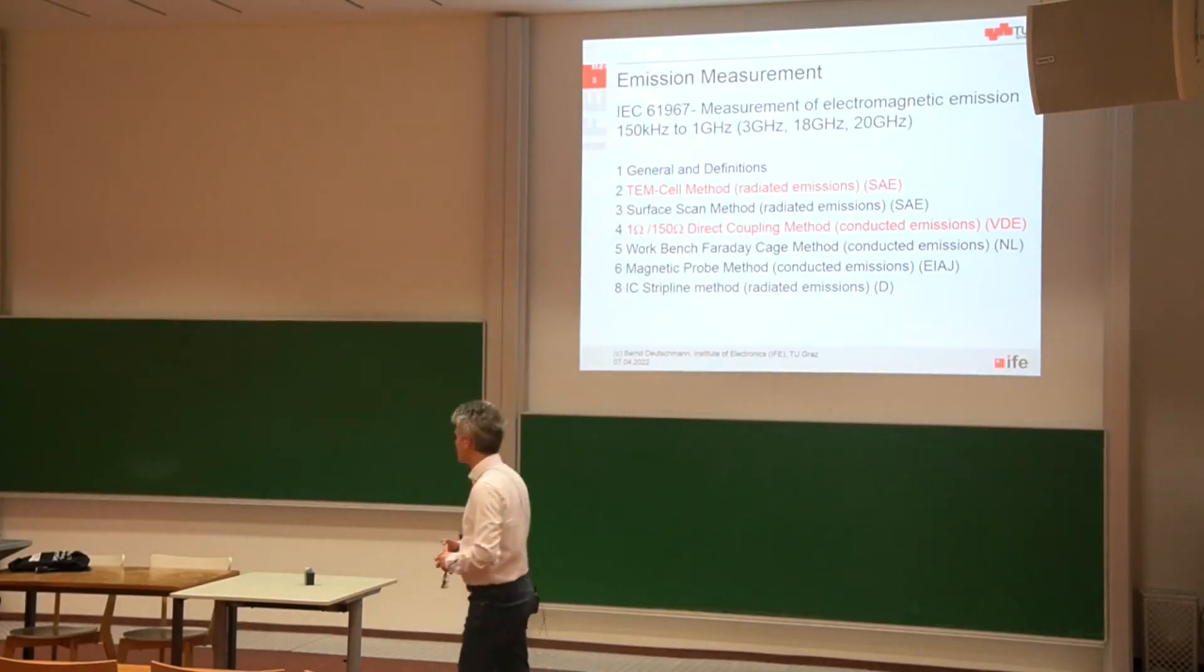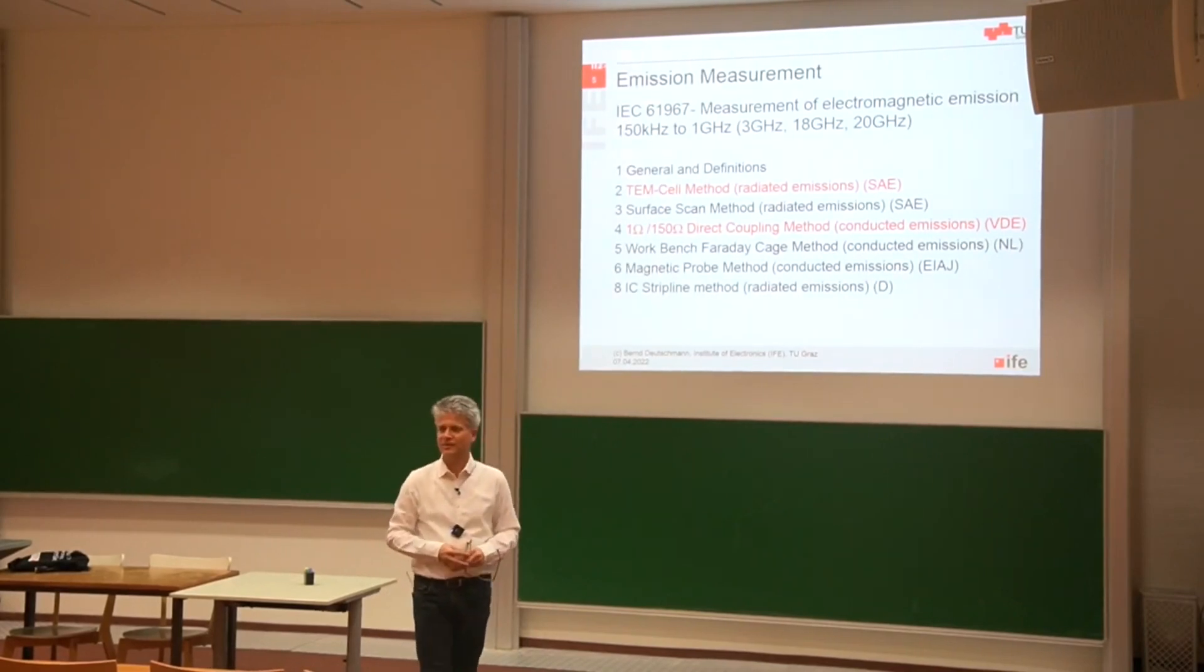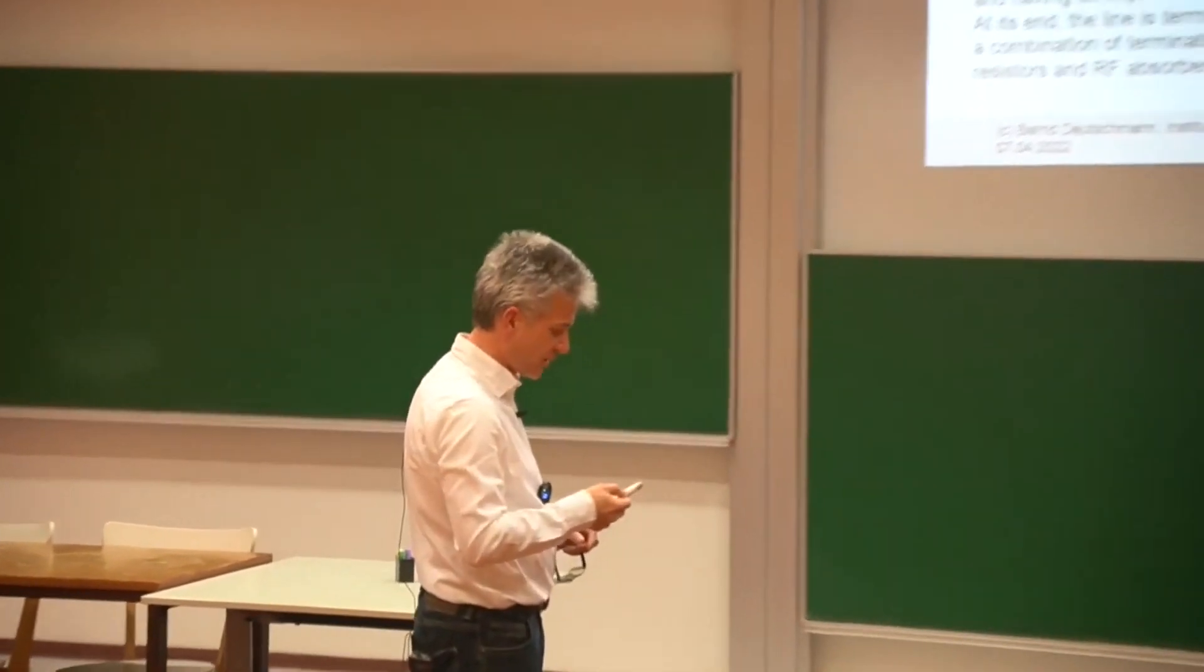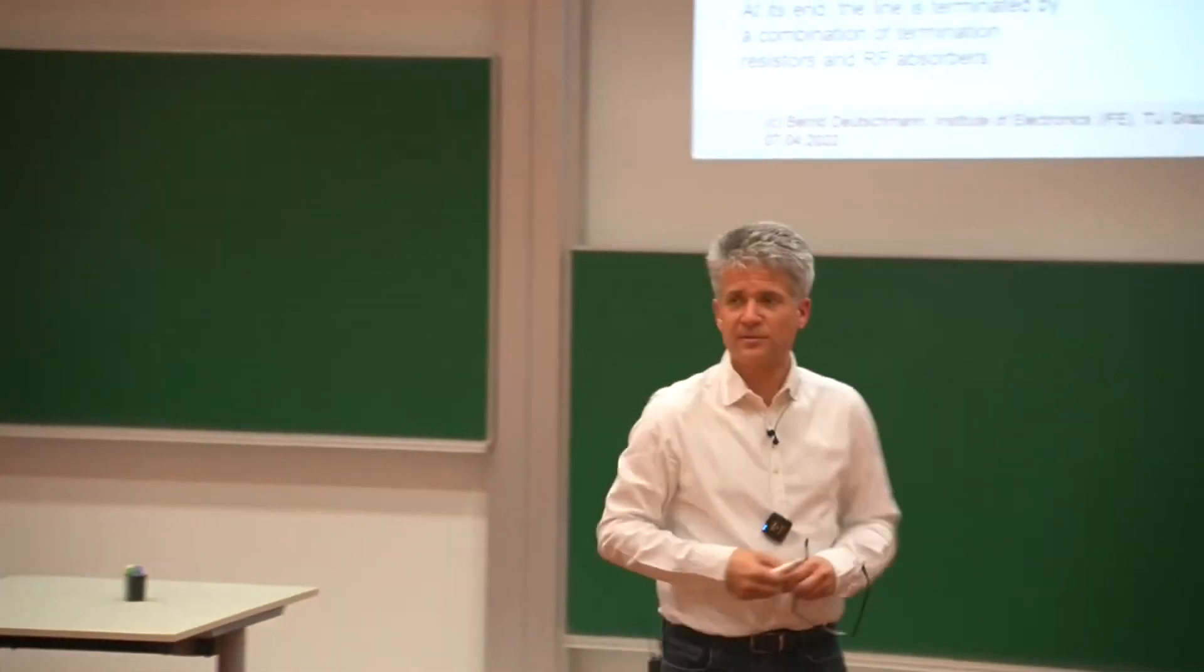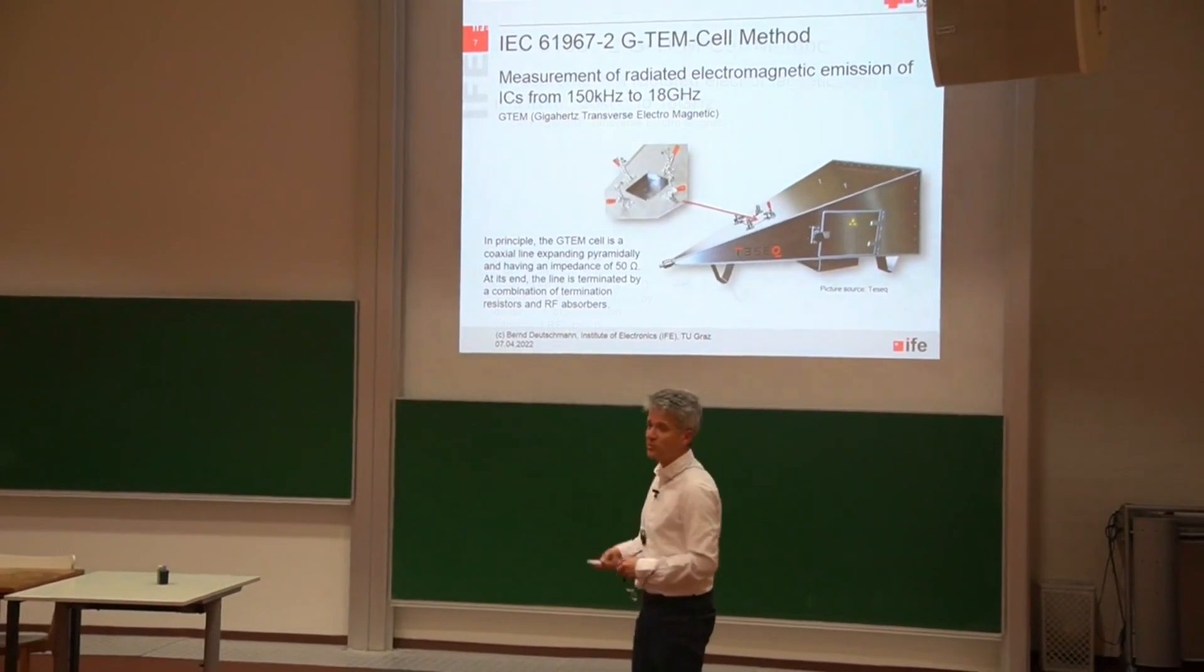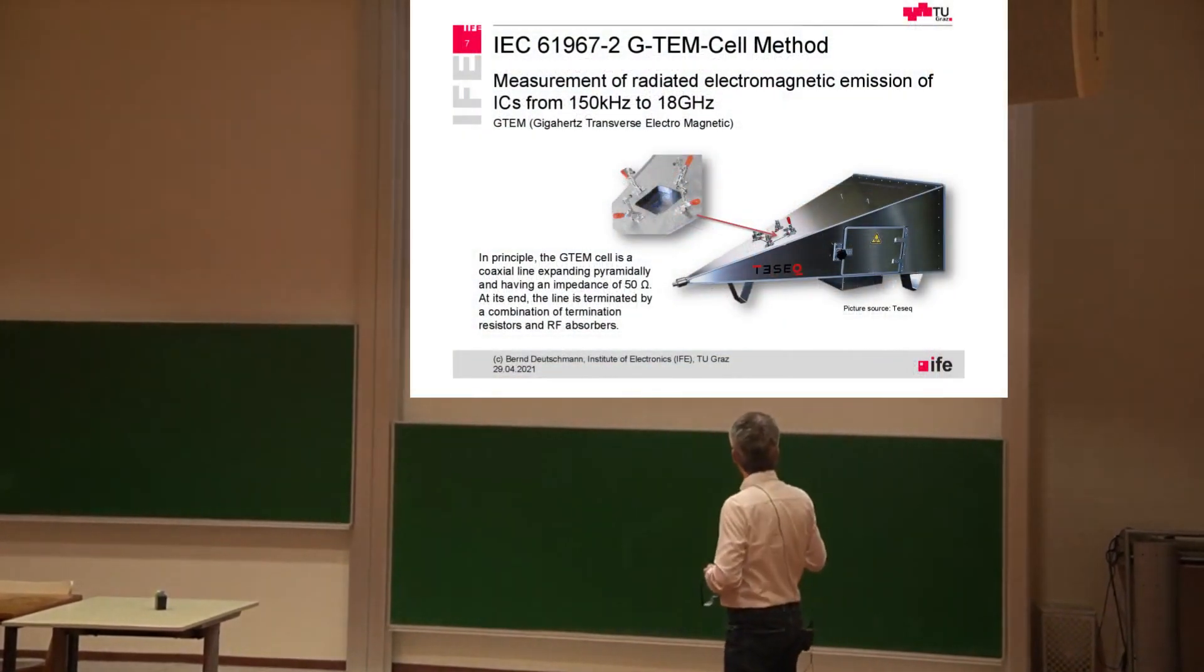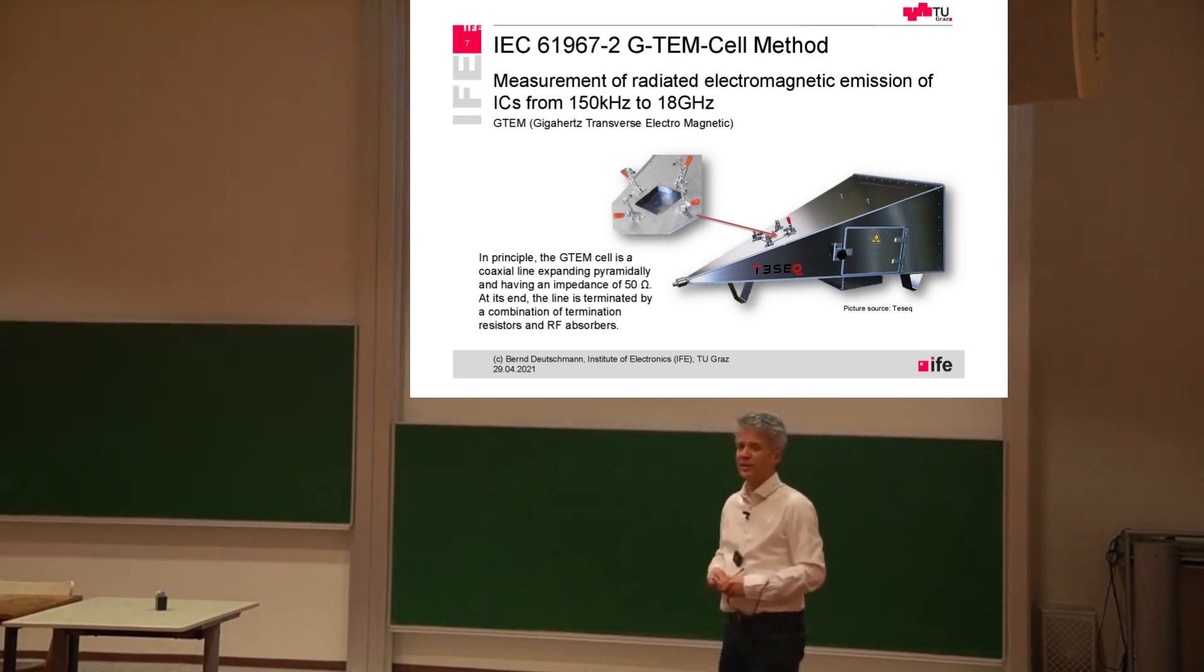The task at the end of the last lecture was to figure out what the G-TEM cell is doing. I've shown you a picture of this thing here. I just mentioned that the big advantage of such a G-TEM cell is the high frequency range, gigahertz range. For example, this TSEC 250 G-TEM cell goes up to about 18 gigahertz.